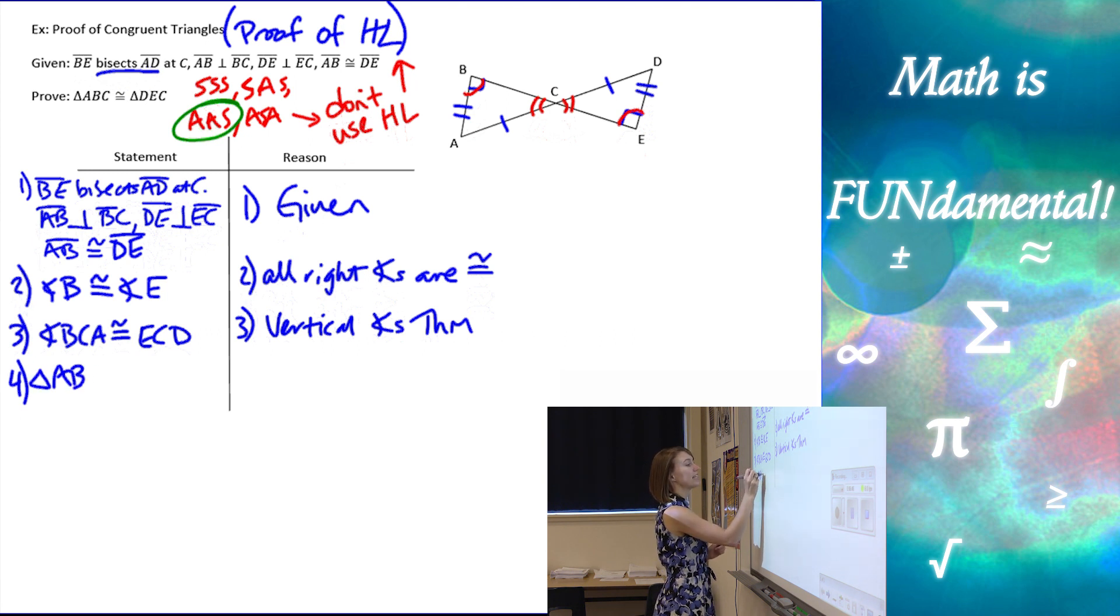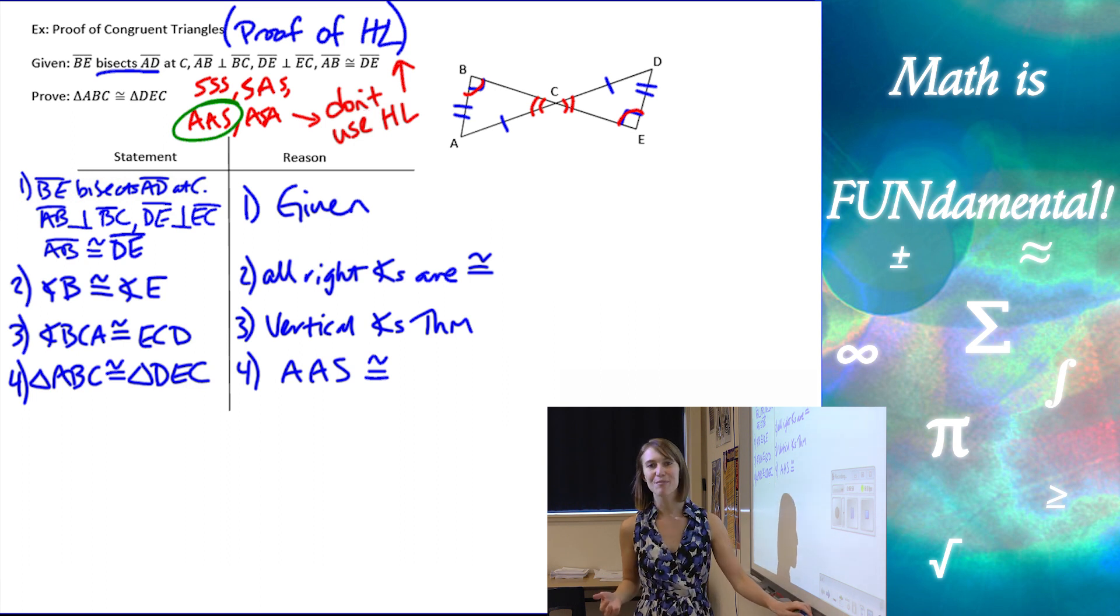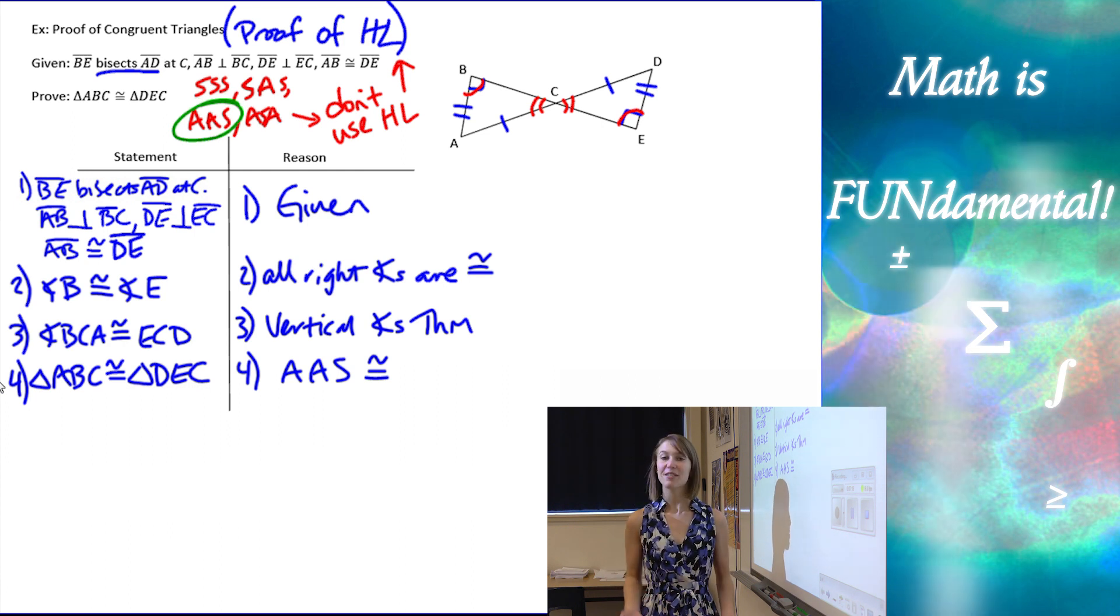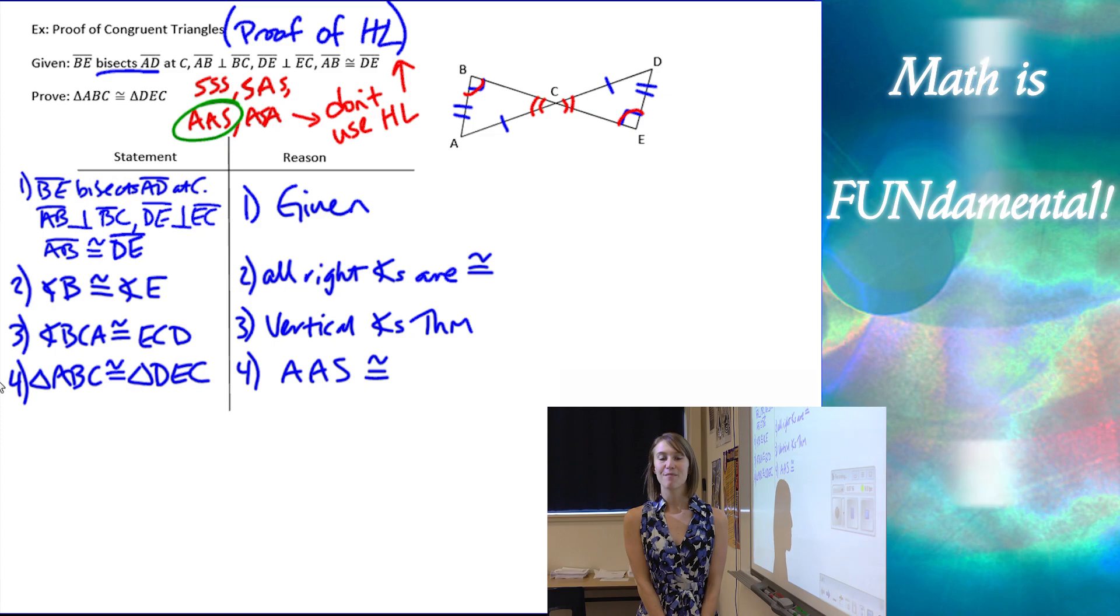So, let's do this. Triangle ABC is congruent to triangle DEC by angle angle side congruent. Sometimes the end of your proof kind of sneaks up on you a little bit and you have to stop and think, oh, do I have enough to stop or do I need to keep going? So that's the proof that proves that HL theorem works. We can use that later in other proofs if it comes up. And I think that concludes our lesson for today. So thank you so much for watching and remember, math is fundamental.